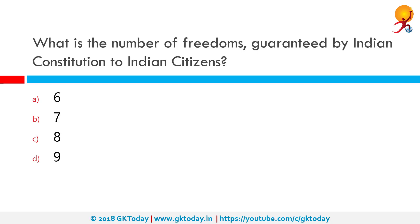What is the number of freedoms guaranteed by the Indian constitution to Indian citizens? Article 19 embodies six basic freedoms. Originally there were seven, but the right to property was removed from fundamental rights and placed under constitutional rights via Article 300A by the 44th Amendment Act. The current six freedoms are: freedom of speech and expression; freedom to assemble peacefully without arms; to form associations, unions, or cooperative societies; to move freely throughout the territory of India; to reside and settle in any part of India; and to practice any profession or carry on any occupation, trade, or business. The word 'cooperative society' was inserted via the 97th Amendment Act 2011.